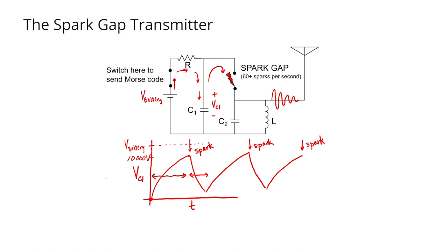As we look back at the voltage across capacitor C1, we see that the sparks occur periodically. Now, how often these sparks occur depends on how long it takes to recharge capacitor C1 after the tank circuit has been depleted and capacitor C2 has been discharged.